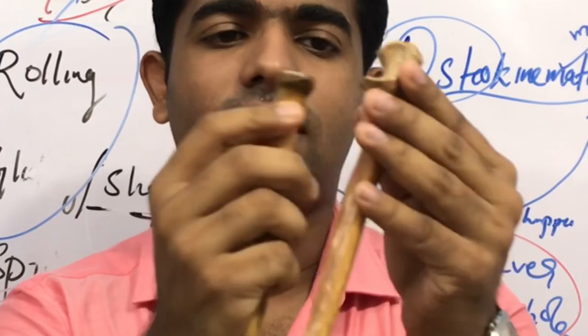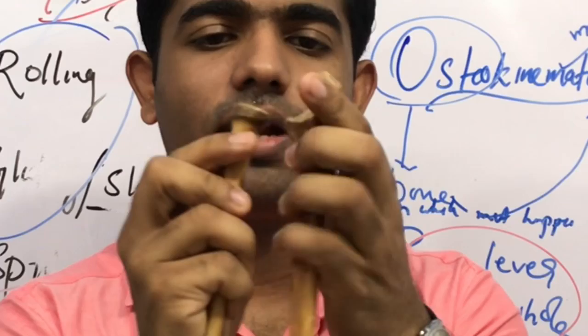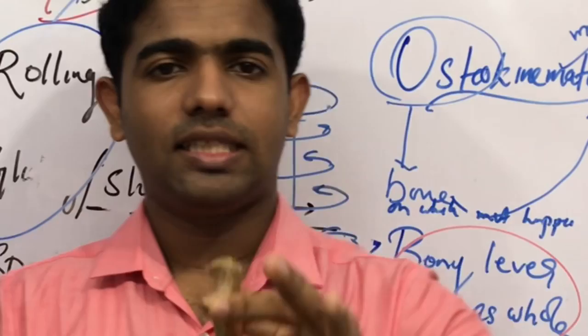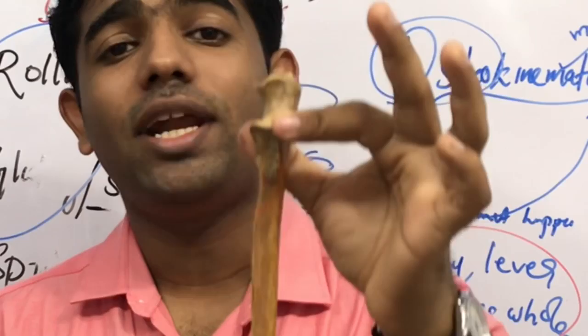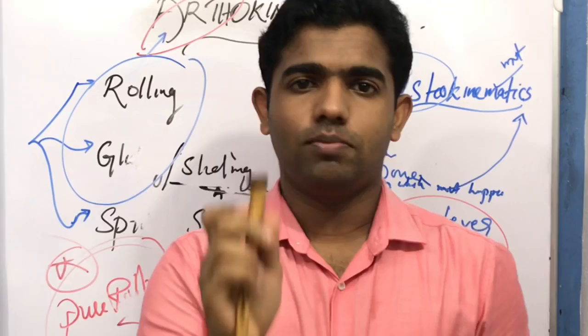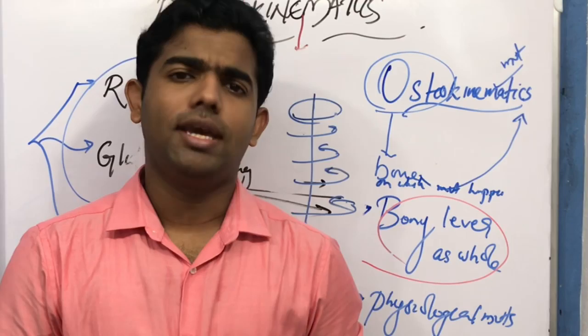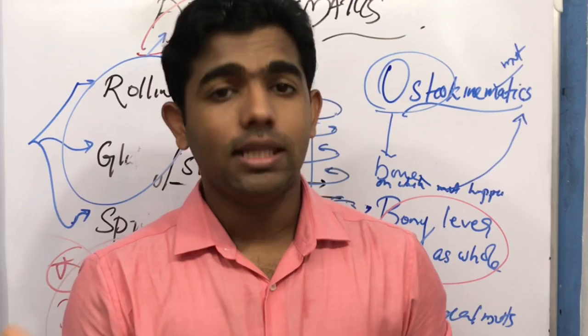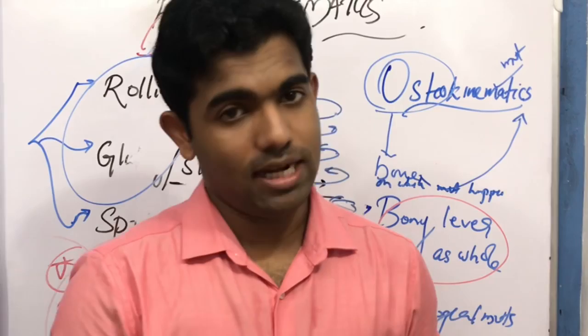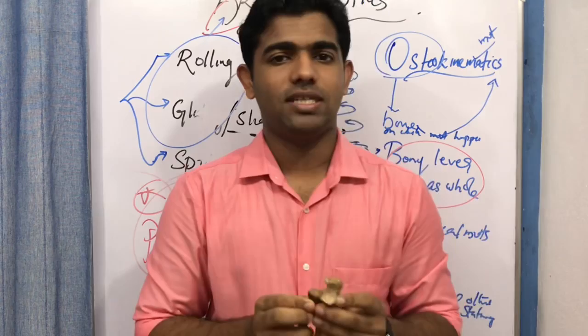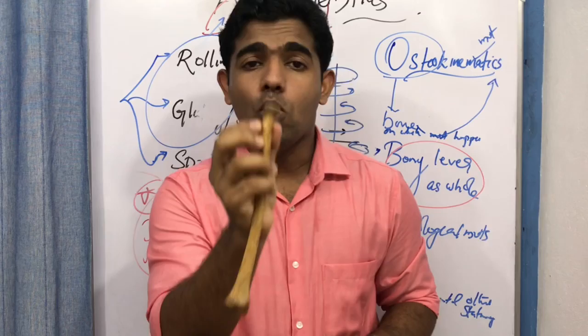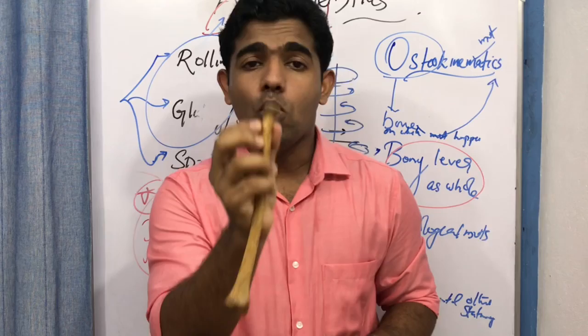To understand spinning versus rolling: in spinning, mark points one, two, and three on the radius. As rolling progresses, point one contacts, then point two, then point three — new points contact the fixed surface. But in a spin, the fixed surface contacts the same point; there is no different point. The moving segment makes contact at new points while the fixed segment's contact point remains the same. Spinning is just rotation around an axis.